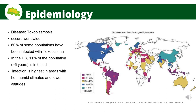The disease caused by Toxoplasma gondii is known as toxoplasmosis and occurs worldwide. More than 60% of some populations in the Americas, Europe, and parts of Asia have been infected with Toxoplasma. In the United States, it is estimated that 11% of the population aged 6 years and older have been infected. The infection is often highest in areas with hot, humid climates and lower altitudes, because oocysts survive better in these types of environments.